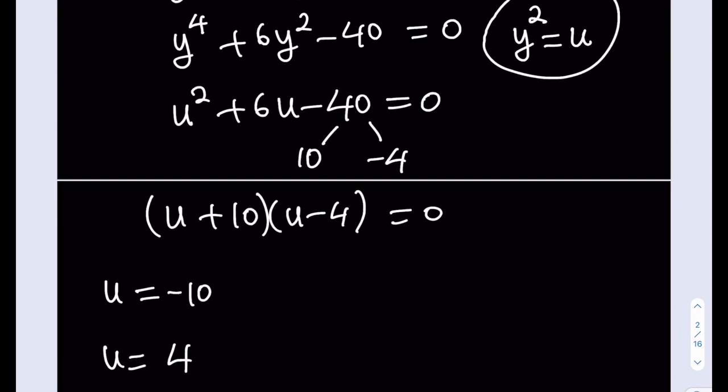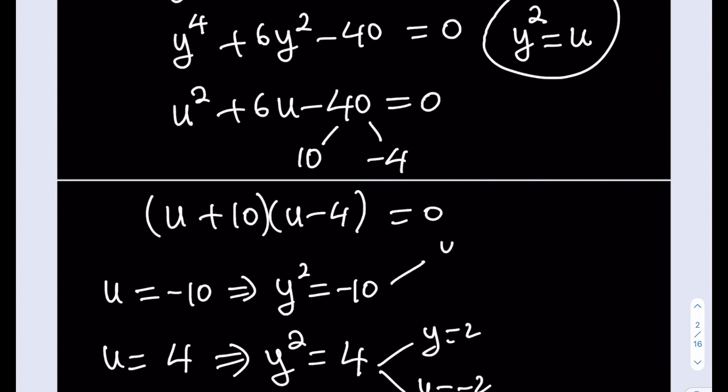Awesome. But what is u? u is y squared. So this means y squared is equal to negative 10. Not a very good result. Not very real, right? And y squared equals 4. This is kind of nice because I get y equals 2 and y equals negative 2. But let's not just discriminate against complex numbers. From here, we're going to be getting square root of 10i and the opposite of that. So we got four solutions. Obviously, it's a quartic equation.